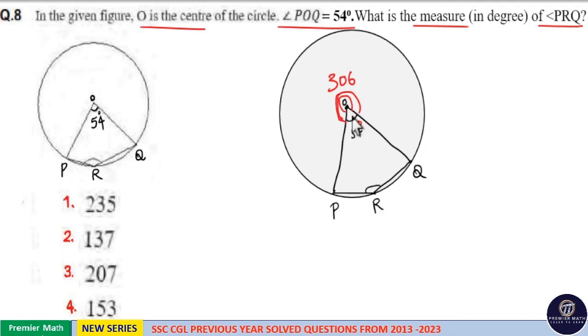Now this angle POQ is created at the center by arc RPQ. That is, the 306 degrees is created by arc RPQ at the center of the circle. The same arc RPQ can create half of this 306 degree angle.